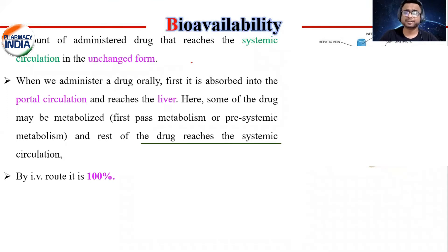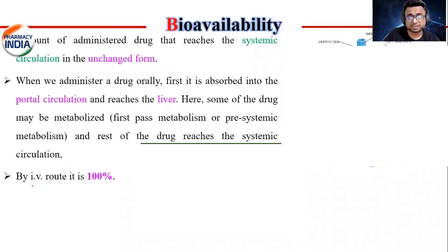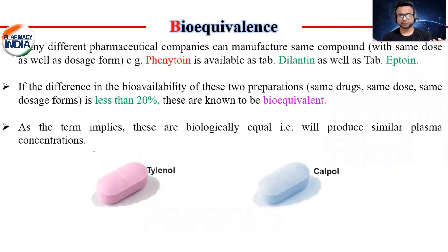Bio-availability की definition: The rate and extent to which administered drug reaches to the systemic circulation in unchanged form is called as bio-availability. Bio-availability को affect कौन करता है? आपके liver का metabolism. अगर liver के अंदर drug enter कर पाता है, तो liver के enzyme उसे destroy कर देते हैं - that process is called as first-pass metabolism. और जो IV route से आप administer करते हो, उसकी bio-availability होती है 100%. Bio-equivalence मतलब दो medicaments हैं, दो अलग-अलग companies ने बनाया है, लेकिन दोनों के अंदर medicament एक ही है. और दोनों dosage form में जो variance है वो less than 20% है, then you can call it as bio-equivalent medications.